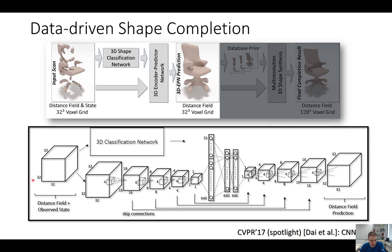The observed state is the sign of the distance field. If that sign is negative, it means the region hasn't been observed yet. This representation is directly given by 3D reconstruction methods, which we can use to generate the input data. The output is a distance field without the sign — everything unobserved gets a prediction to make the shape complete. This is a 3D convolutional encoder-decoder U-Net structure with skip connections. We also have a 3D classification network that provides additional classification features, which we concatenate. This is what the reconstruction produces at the end.